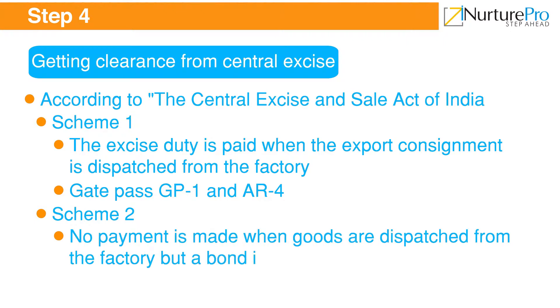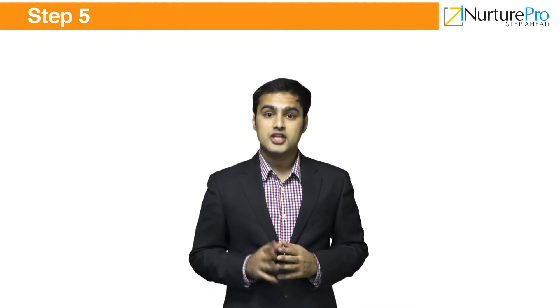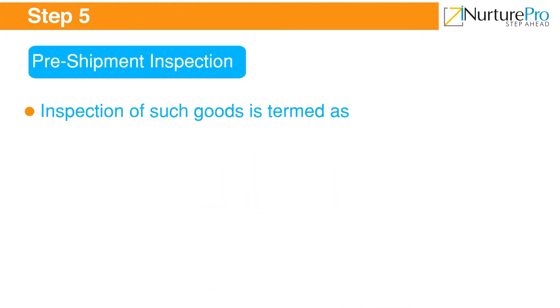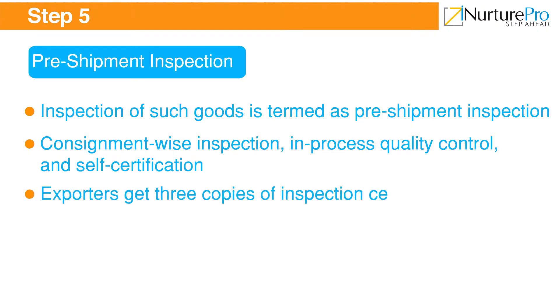Once the credit is received, the exporter commences production. Once goods are manufactured, the exporter applies for clearance from the Central Excise Duty. According to the Central Excise and Sales Act of India, there are two schemes that enable exporters with 100% rebate on duty upon submitting proof of shipment. Under the first scheme, excise duty is paid when the export consignment is dispatched from the factory, and a claim for rebate is filed after exporting the goods. To claim the rebate, the exporter should submit Gate Pass GP1 and the AR4 form to the Superintendent of Central Excise Department of the concerned locality.